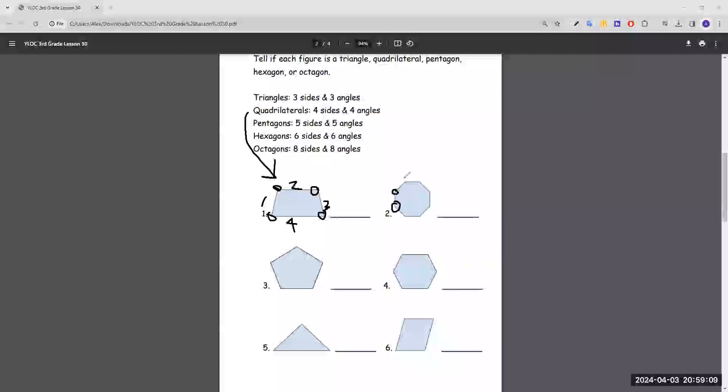Number two, one, two, three, four, five, six, seven, eight angles. And if we really wanted to, we could count the sides, but it's just going to be the same as the amount of angles. So that would be octagon.